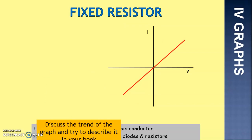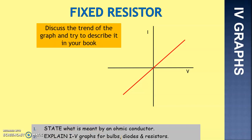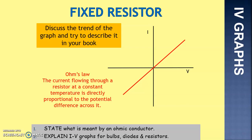Next one: a fixed resistor. The trend of the graph is a straight line — this obeys Ohm's Law and will be known as an Ohmic component. Current flowing through the resistor at a constant temperature is directly proportional to the potential difference across it. It increases by the same amount each time. If you double the voltage, you double the current. So as voltage increases, current increases, keeping resistance constant.